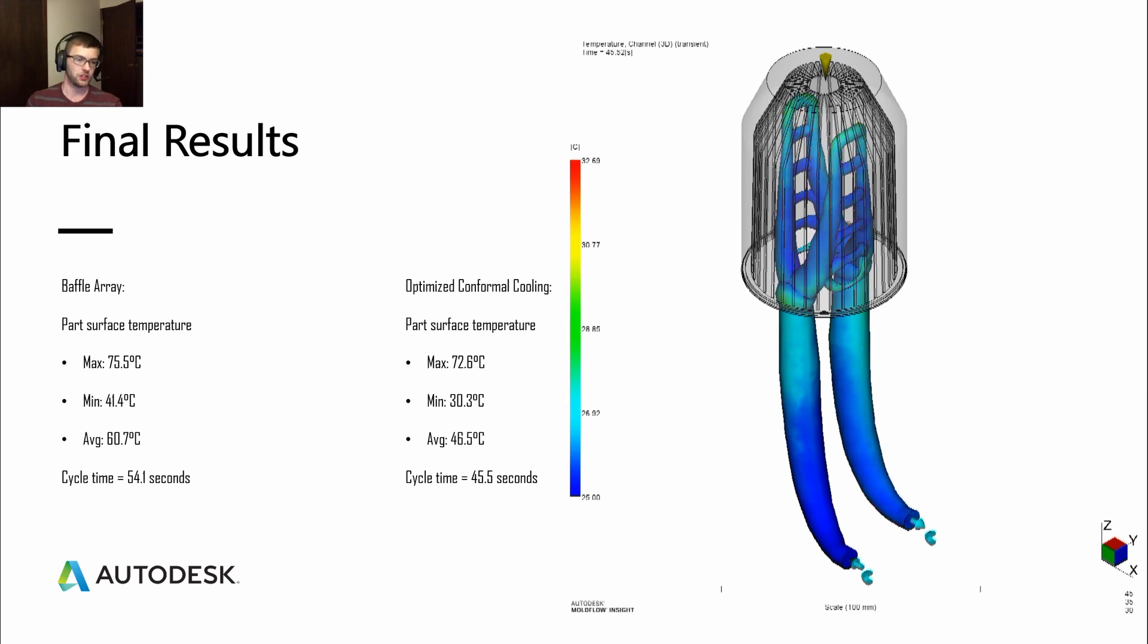Let's look at the final results and compare those to the baffle array. The original design, the baffle array design had a maximum part surface temperature of 75 and a minimum of 41 degrees Celsius. The average was 60.7 and the total cycle time was 54 seconds. For the optimized conformal cooling, we had a part surface temperature that had a maximum of 73 and a minimum of 30 degrees Celsius. And then the average was 46 degrees C with a cycle time 9 seconds faster at 45 seconds.